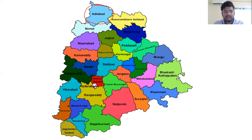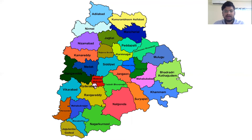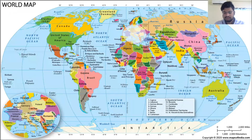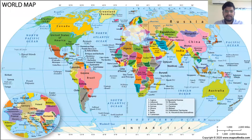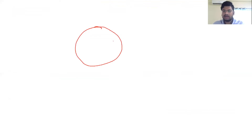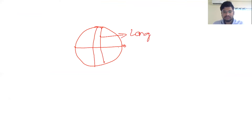For example, Adilabad shares border with Nirmal district and Kumaram Bheem Asifabad district. Similarly, Mancherial district shares border with Kumaram Bheem Asifabad, Nirmal, Jagityal, Pedapalli, and Jayashankar Bhupalapally. You should have a clear understanding of the location of each district and its bordering districts.